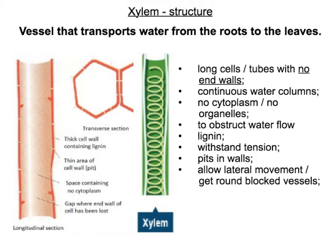The fact that the tube joins the roots all the way at the top to the leaves means you've got a continuous column of water. You have pits in the side of the xylem that allow water to move out sidewards into the cells that surround the xylem. Some of those cells might want to become more turgid to help support the plant and keep it upright in the stem.